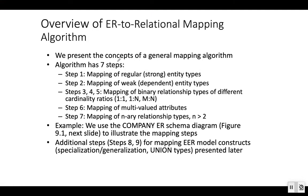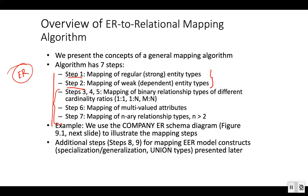We are going to present the concept of a general mapping algorithm. From a basic ER diagram there are seven steps. Step one and step two are about mapping the entities — mapping regular entities and weak entities. The remaining steps are about mapping the relationships, and step six specifically talks about how to map multi-valued attributes.